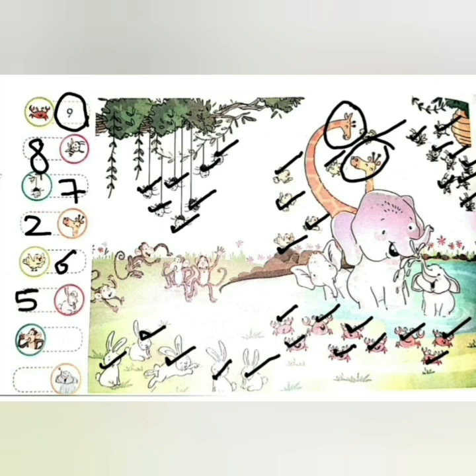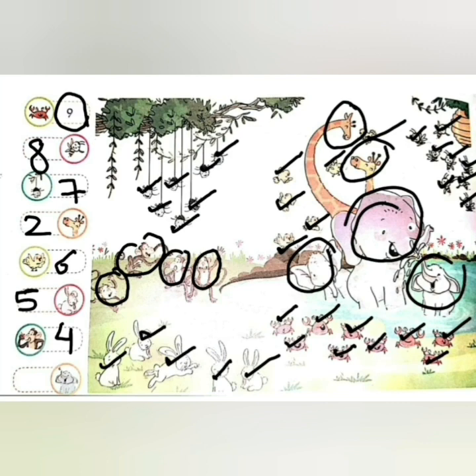How many monkeys are there in the picture? Let's count. 1, 2, 3, 4. There are 4 monkeys. How many elephants are there in the picture? Let's count. 1, 2, 3. There are 3 elephants.